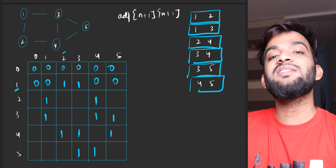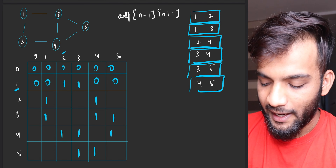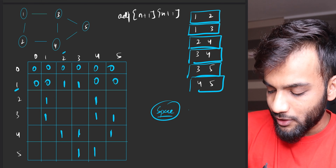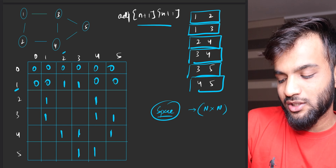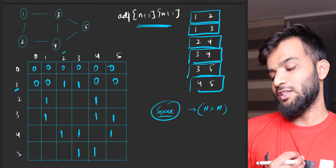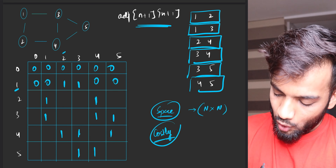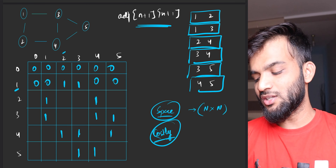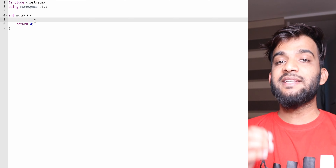All remaining cells are filled with zeros. This matrix tells you if there's an edge between any two nodes — for example, edge between 3 and 4: yes; edge between 4 and 2: yes; edge between 5 and 2: no. The space used is N×N, which is costly.